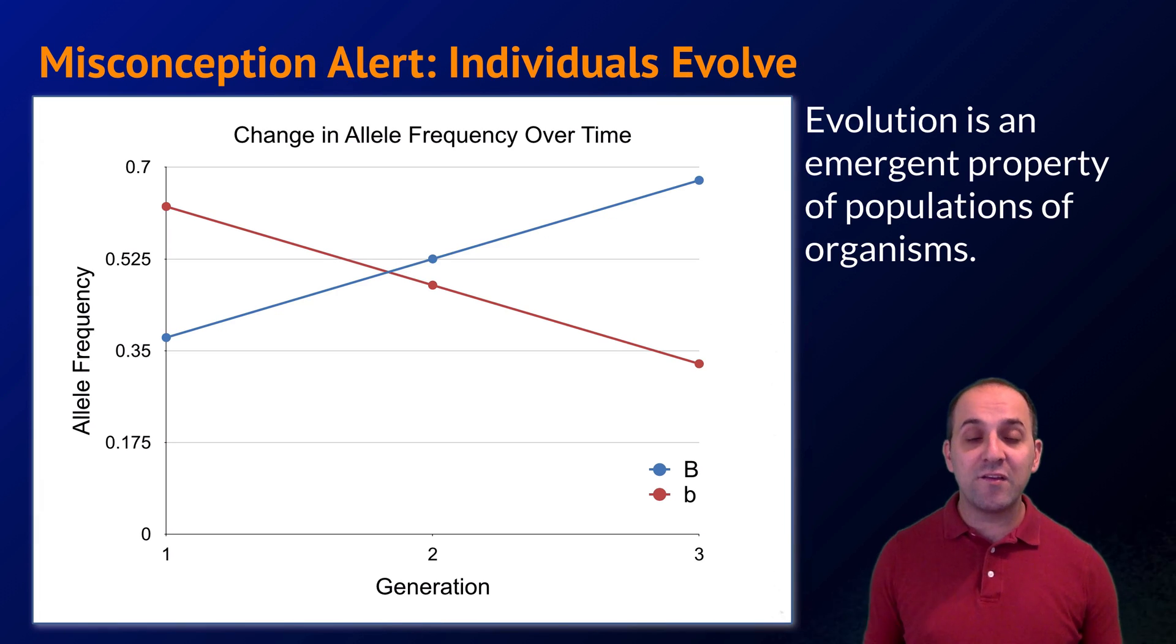Let's pause here and talk about another misconception that people frequently have when thinking about evolution, which is the idea that an individual evolves. Individuals cannot evolve because their genotype is static from birth through death. Evolution is a property of populations of organisms. It's an example of a broad phenomenon that we see in biological systems known as emergence, where one level of organization, in this case the population level, has properties that we don't see in the level of organization below it, in this case the individual level.